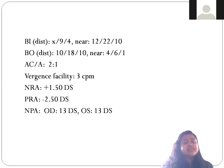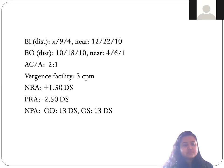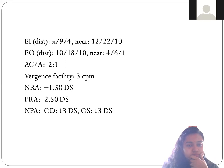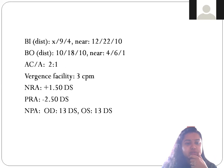When we check the AC/A ratio, it is 2:1 — only 2:1. What do you think about the base-in and base-out values? Are they normal? There are definitely abnormalities — it is much lower than normal, much lower than the normative values the child should have.